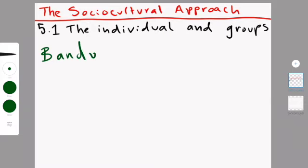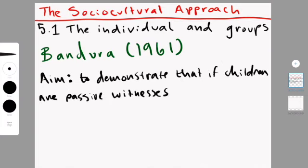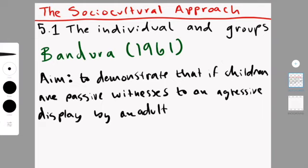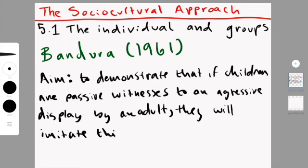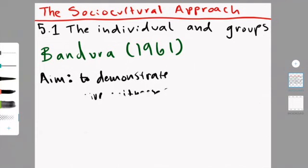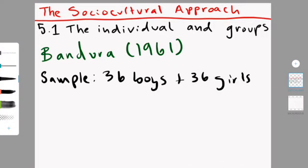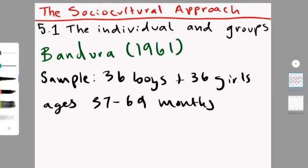Just like in my previous video, now we will be going through a study that is relevant to the social cognitive learning theory. So one of the most prominent studies is Bandura's experiment, Bandura's study that happened in 1961. So his aim was to demonstrate that if children are passive witnesses to an aggressive display by an adult, they will imitate the aggressive behavior when given the opportunity. So the sample for this was 36 boys and 36 girls aged between 37 and 69 months. I really don't know why they said this in months, because, you know, they're going to be like 3 years old-ish to something.